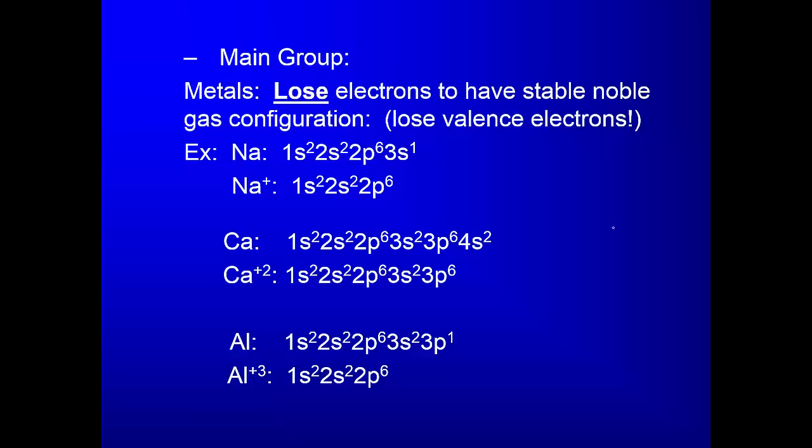Remember we looked at the noble gas configurations and talked about the valence electrons, the last S and P. Let's look at these configurations. 1s2 2s2 2p6 3s1, that's normal sodium. When it's an ion it's going to lose one electron. Now look at this, this is like the configuration of neon. That is stable. All noble gases are stable. I call these noble gas wannabes. They want to be stable like the noble gases are.